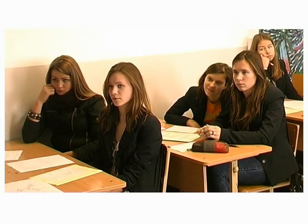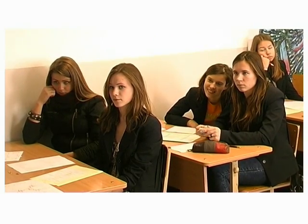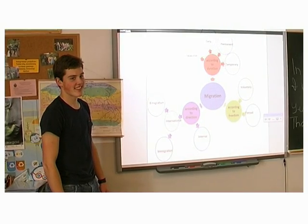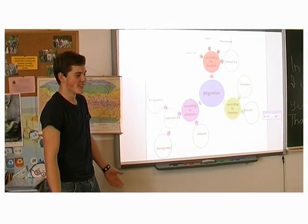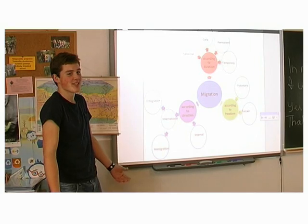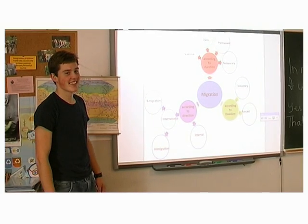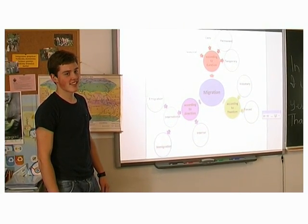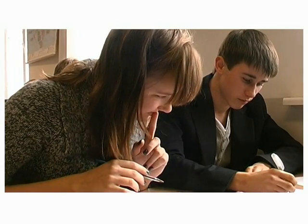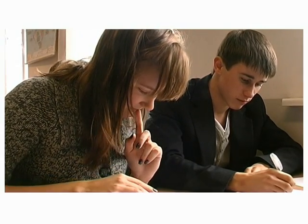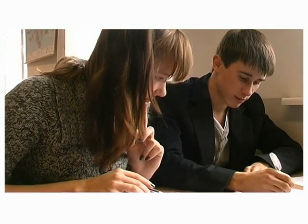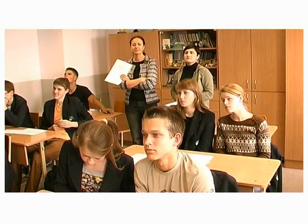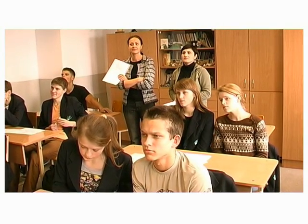Could you talk to everybody, just in general, what we have here? According to duration, how many different kinds of migration do we get? Four. And they are? Seasonal, daily, permanent, and temporary.